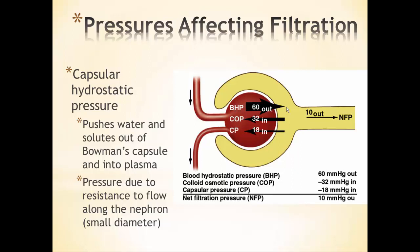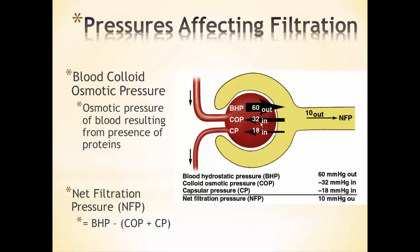We also have pressures opposing filtration. The capsular hydrostatic pressure — fluids pushing on the outside wall of Bowman's capsule — wants to push fluid back into the glomerulus, opposing blood hydrostatic pressure. Then there's blood colloid osmotic pressure, which is the pull inward. We have big plasma proteins in the glomerulus, and just like in capillary dynamics, osmotic pressure wants to pull fluid back into the glomerulus. That pressure is about 32 mmHg — still smaller than blood hydrostatic pressure, but it's still there.